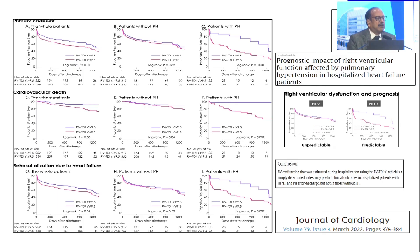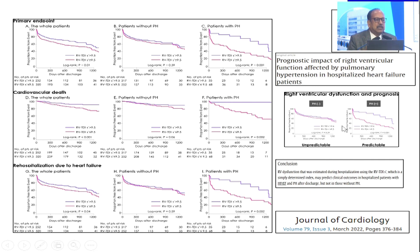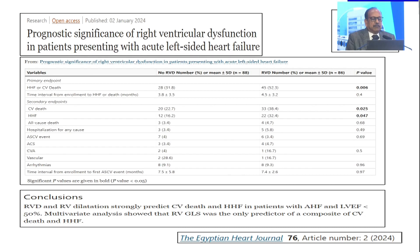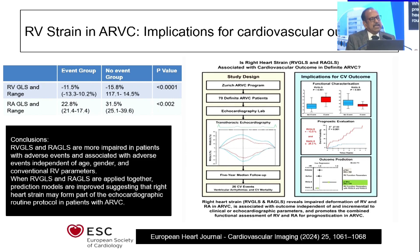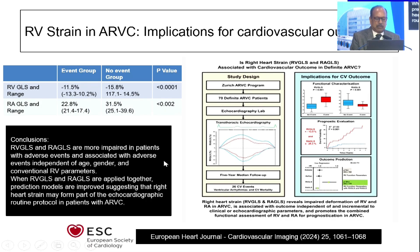This is a busy slide on patients having pulmonary artery hypertension with or without reduced RV GLS. If you have a reduced RV GLS — measured not by GLS alone, but also by tissue Doppler imaging TDI velocity less than 9.5 versus more than 9.5 — if a PAH patient has got reduced TDI velocity, they have a poor outcome. Also, prognostic significance of RV dysfunction in patients presenting with acute left heart failure: if you develop RV dysfunction or dilatation, your outcome is very poor regarding cumulative mortality or recurrent hospitalizations. In ARVC, if RV GLS and right atrial strain are both significantly reduced, these people have a poor outcome.